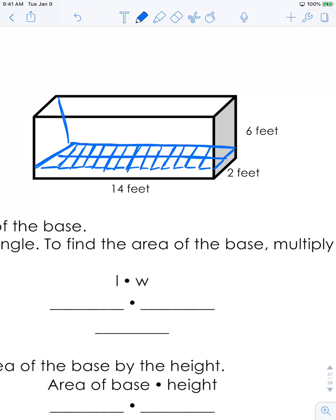So if you can imagine this whole bottom here is filled with cubes. So if you have 14 cubes that go across and then two cubes that go deep, how many total cubes do you have on the bottom?